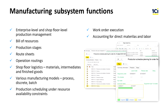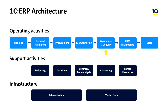The manufacturing subsystem helps to develop the production schedule, taking into account resource availability. Managers can plan order execution, calculating the accurate terms of their fulfillment. Therefore, customer satisfaction increases. We can account for direct material and labor costs to calculate the total production cost of finished products.